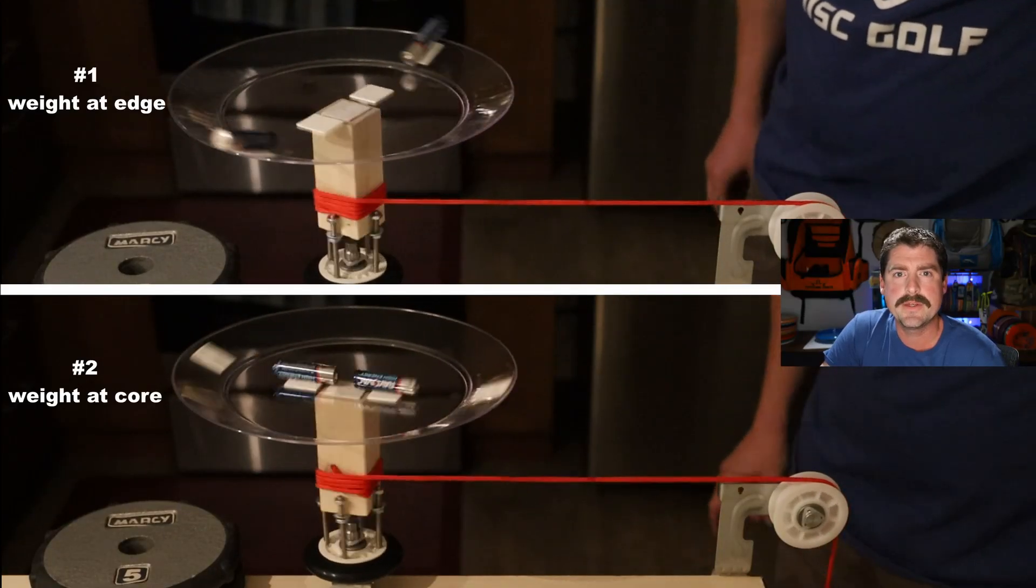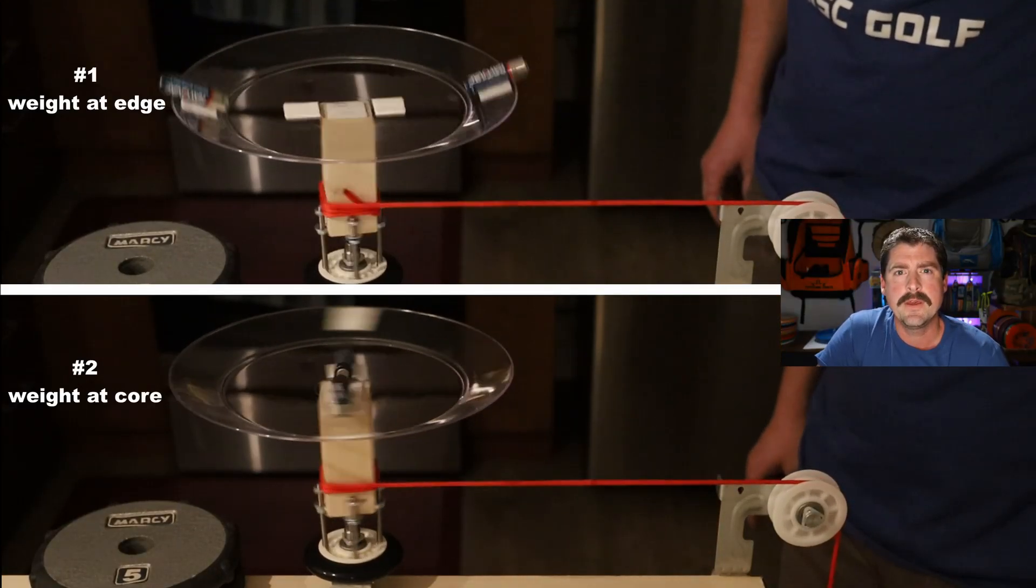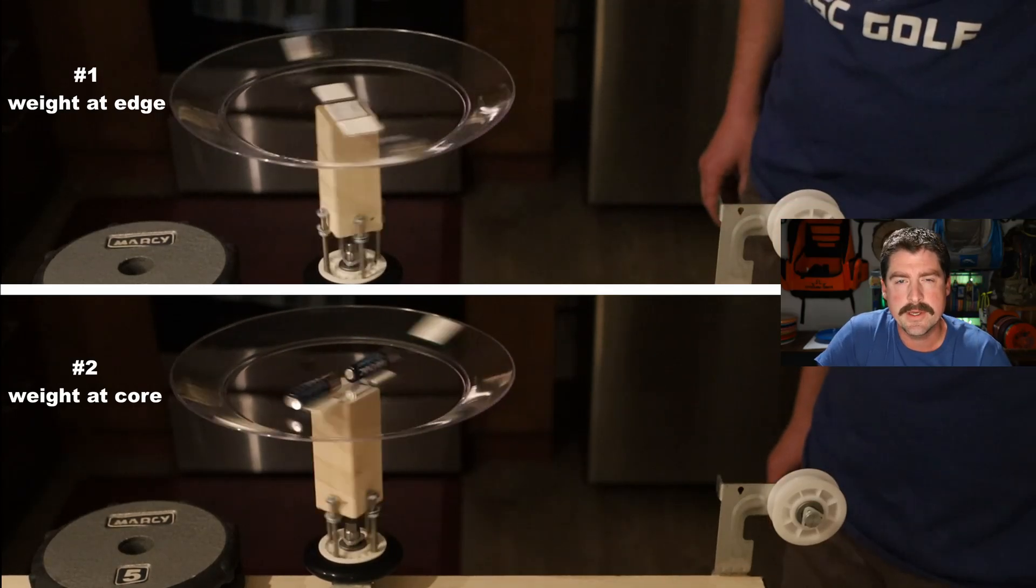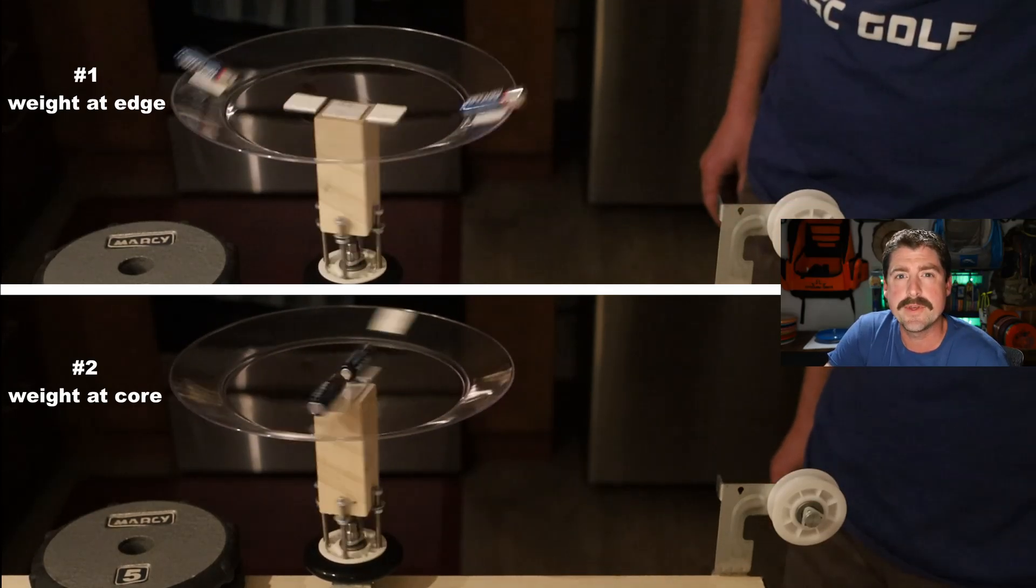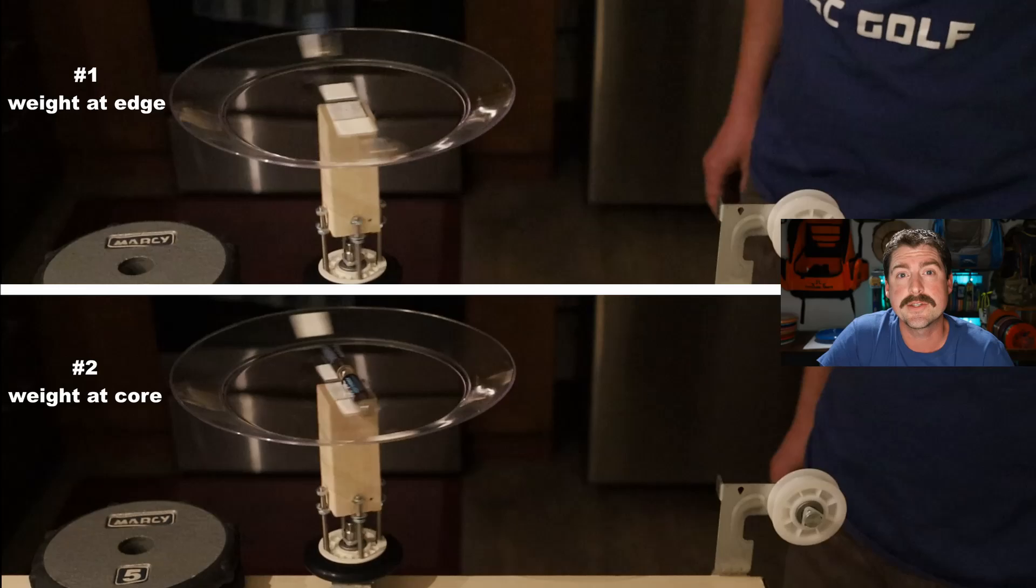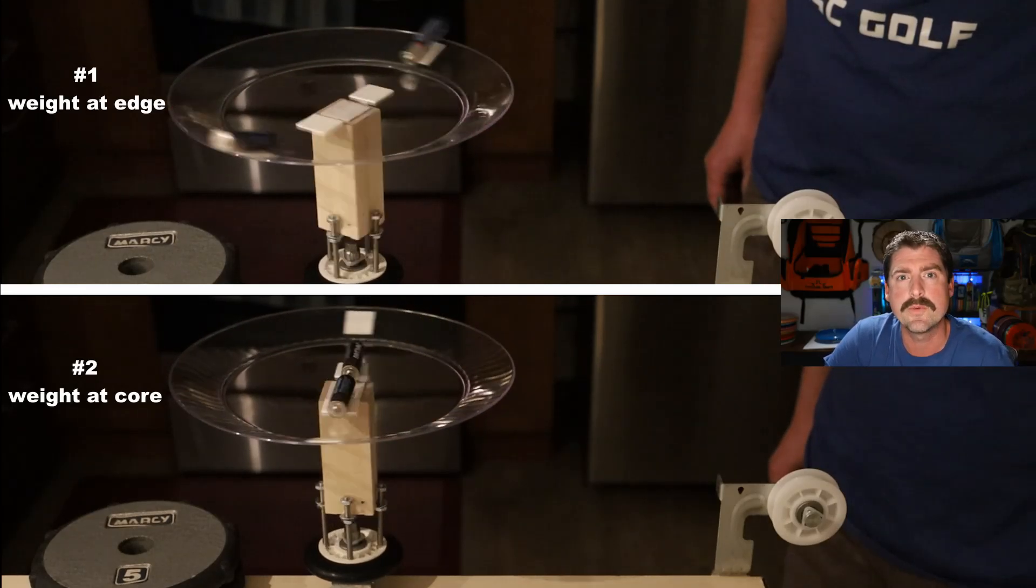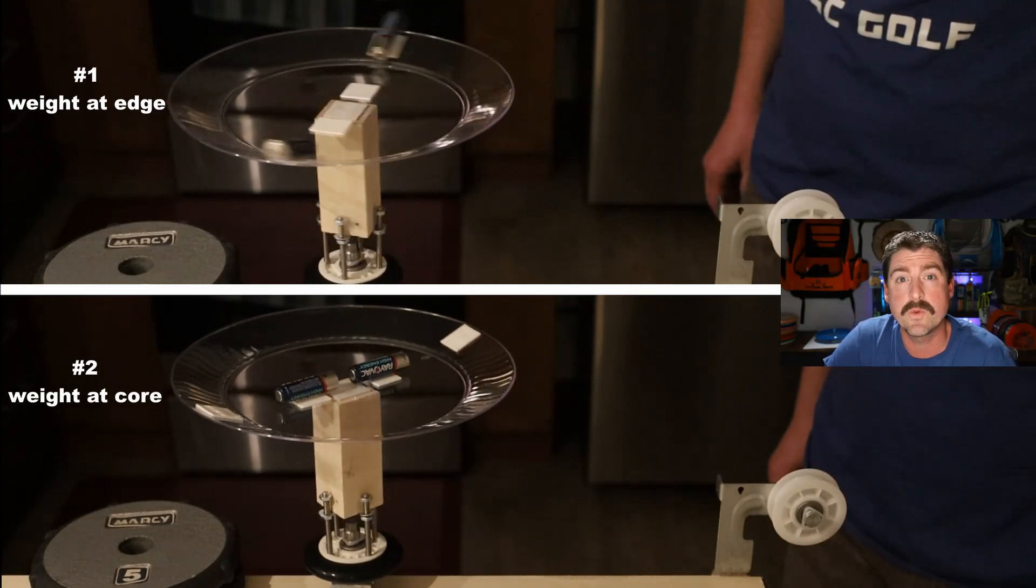Let's talk a little bit about MVP's overmold technology. With the double shot mold, they're able to put more weight near the edge of the disc. MVP claims that this causes the discs to spin for longer than a single shot mold with more evenly distributed weight.